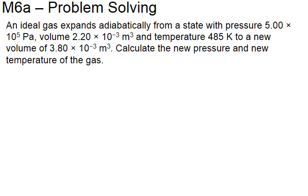Problem M6a: an ideal gas expands adiabatically from a state where pressure is 5×10⁵ Pa, volume is 2.2×10⁻³ m³, and temperature is 485 K, to a new volume of 3.8×10⁻³ m³. We want to calculate the new pressure and new temperature of the gas.